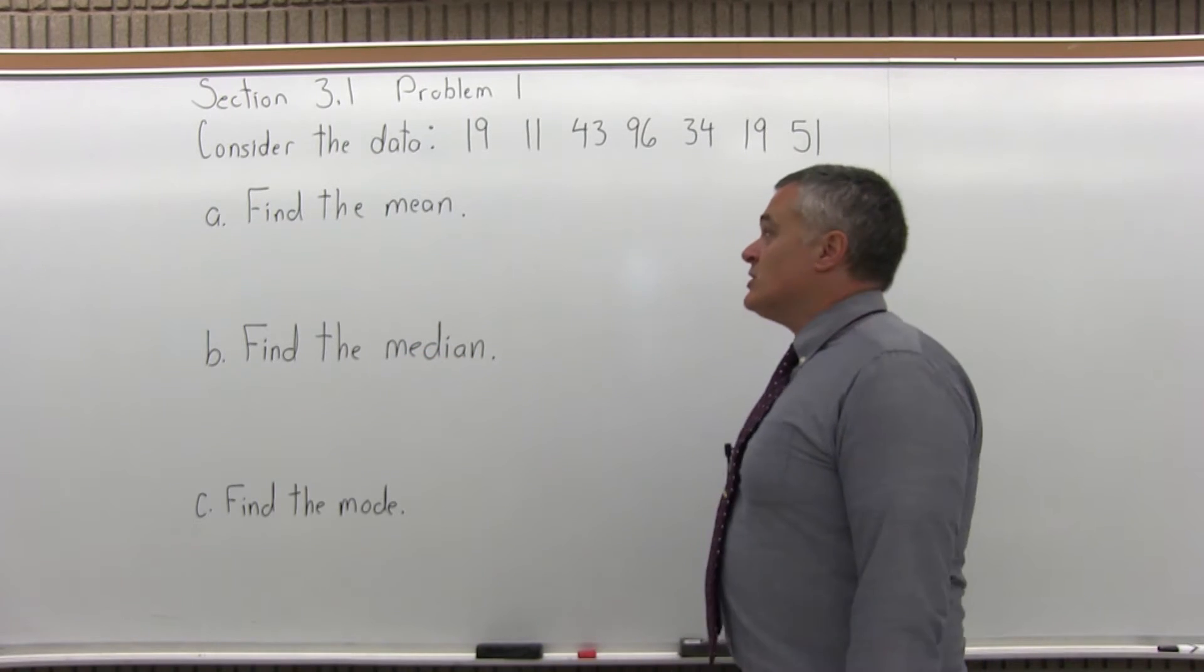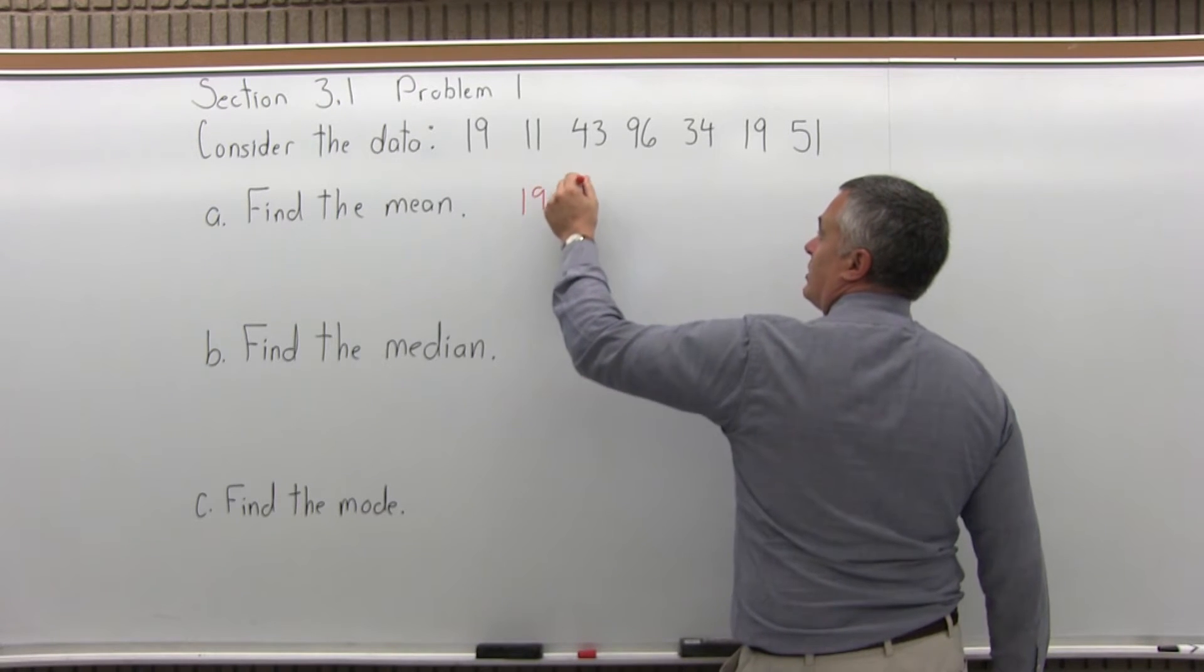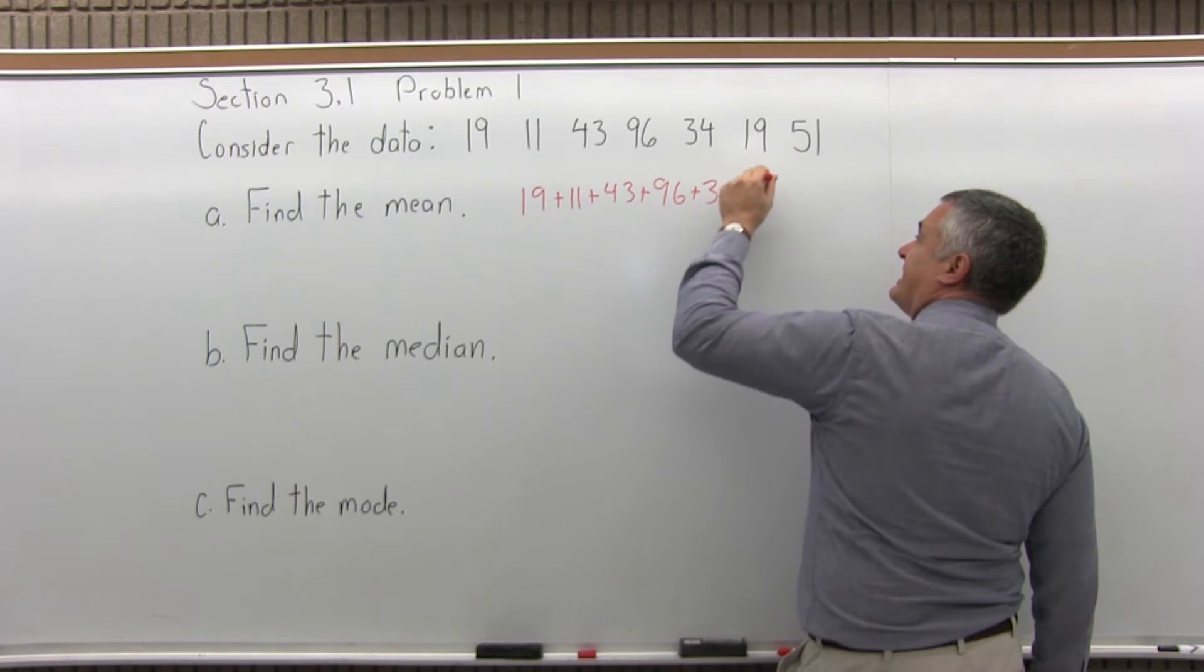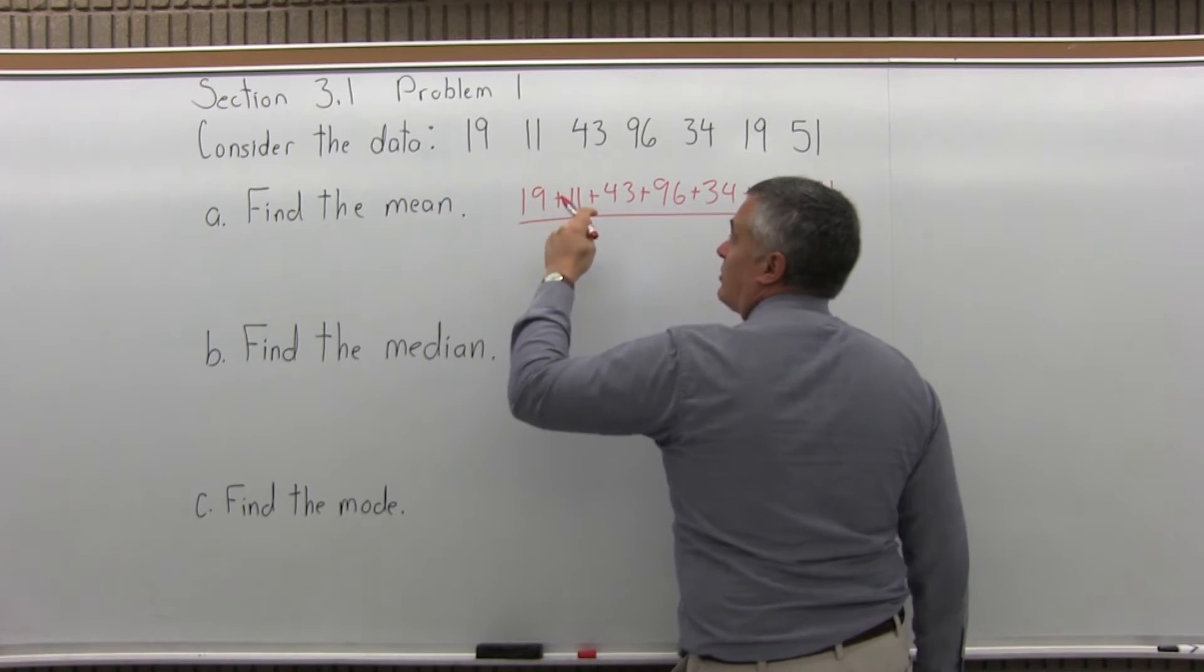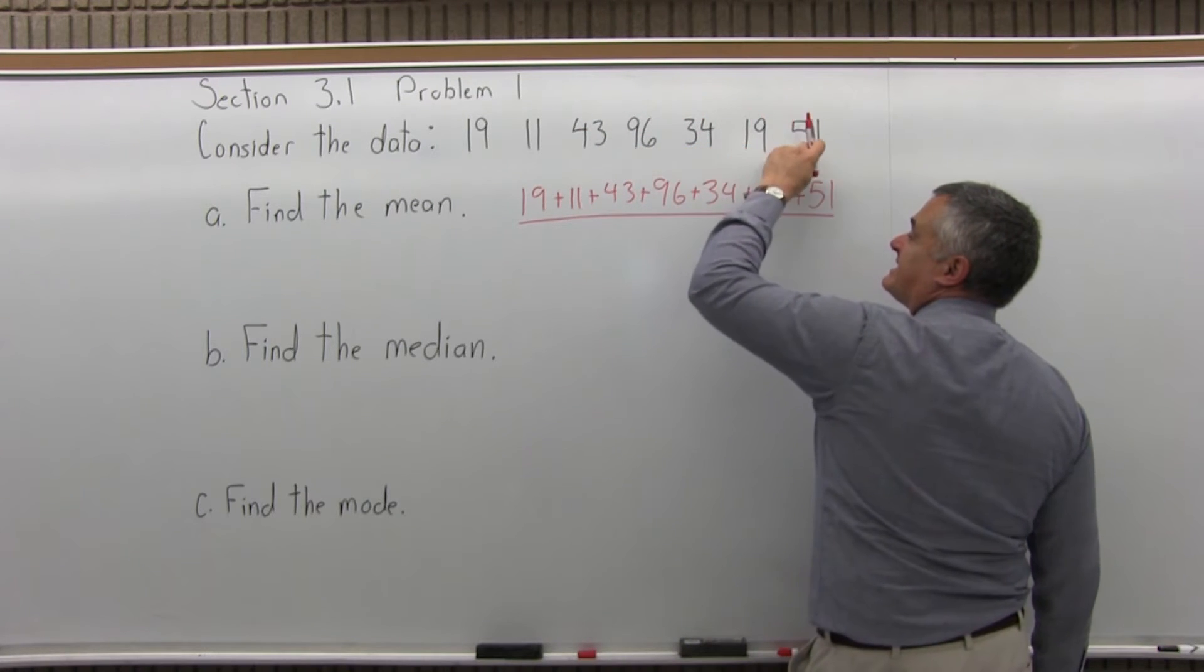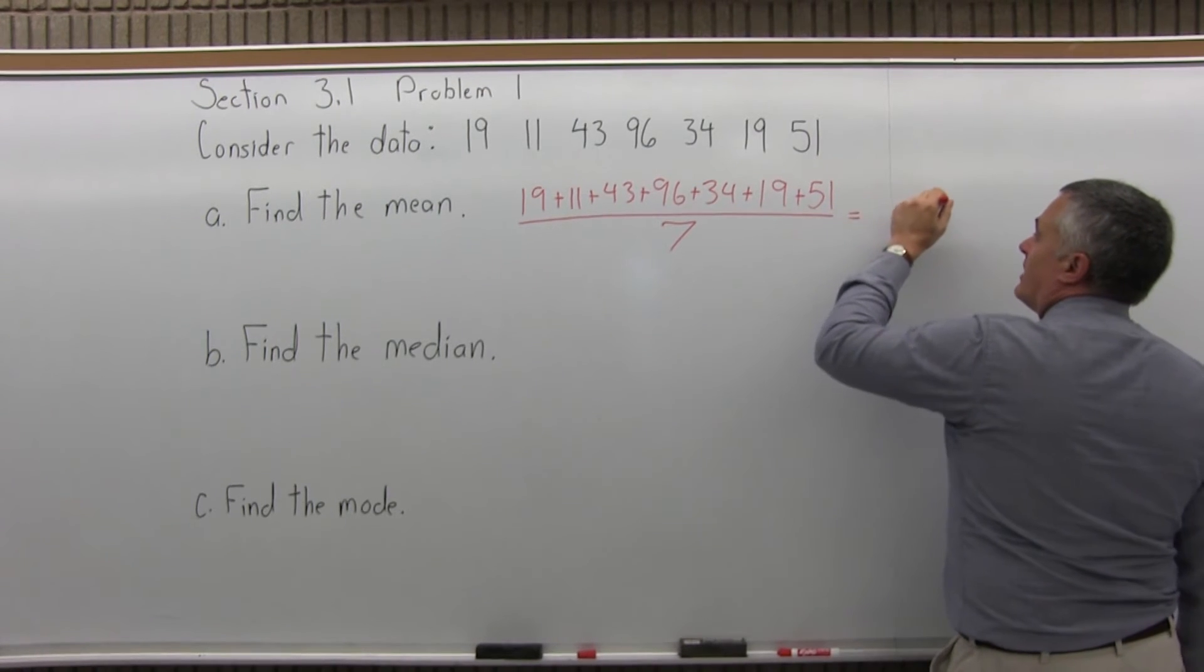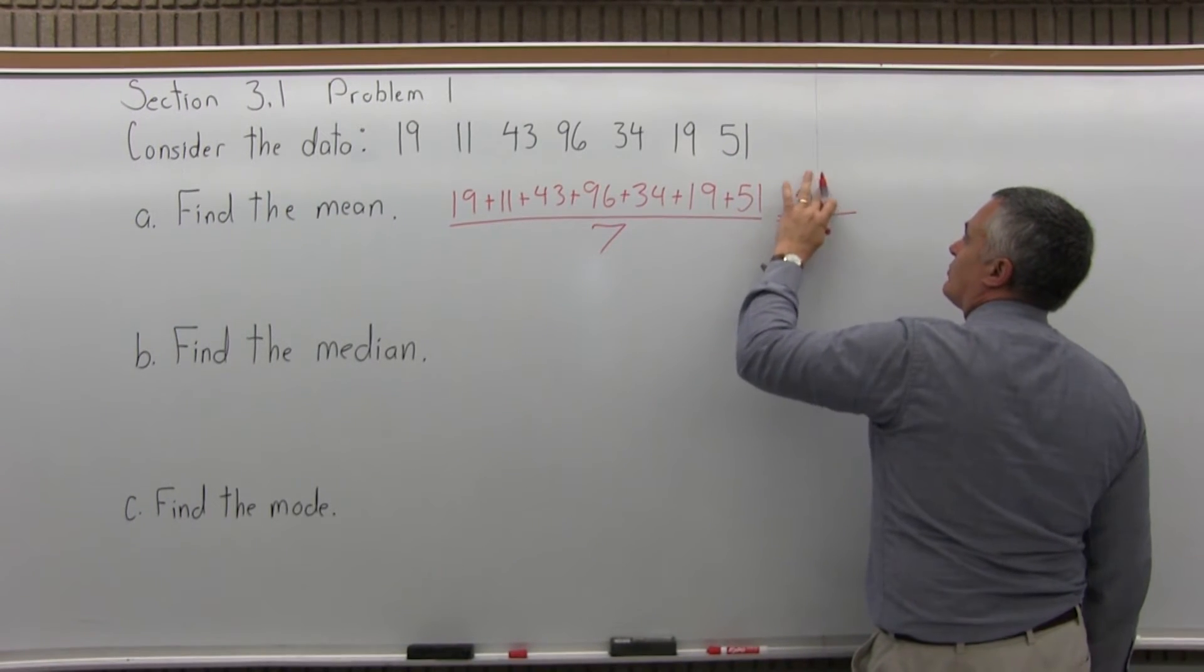So for the mean, we're looking for the average. What we're going to do is add 19 plus 11 plus 43 plus 96 plus 34 plus 19 plus 51. And that total will get divided by 1, 2, 3, 4, 5, 6, 7, because there are 7 data values. So with your calculator, you can add up the top, and it would add up to 273.